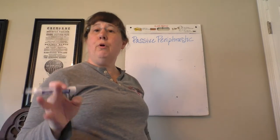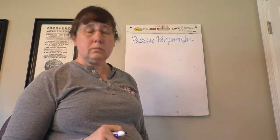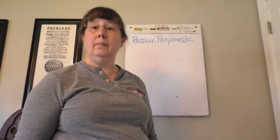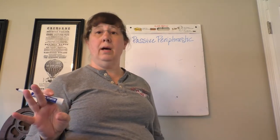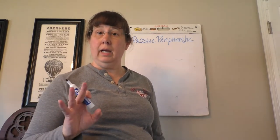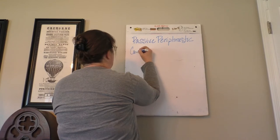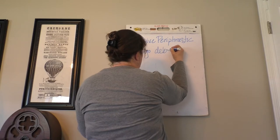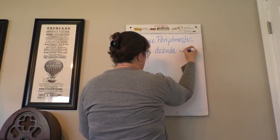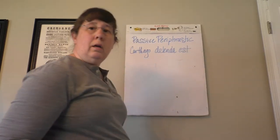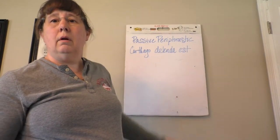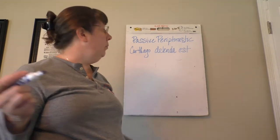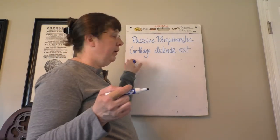Passive periphrastic. You've already seen one of these, and it is the favorite phrase of Cato the Elder. Say it with me now: Carthago delenda est. My shoes are too small and Carthage must be destroyed. This is a passive periphrastic.